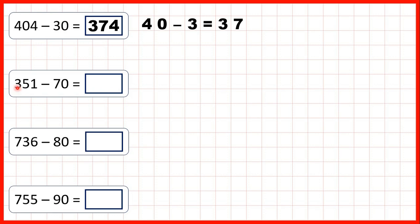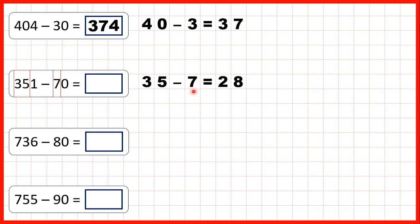Now let's look at 351 minus 70. We're subtracting zero ones, so our ones digit will stay the same. But if we ignore our ones digit, we have 35 minus 7, which is 28. Remember, we can subtract mentally by bridging — if we subtract 5 we get to 30, and then subtract 2 more because that means we've subtracted 7 altogether. So because 35 minus 7 is 28, we write 28 and keep our ones digit the same, giving us 281.